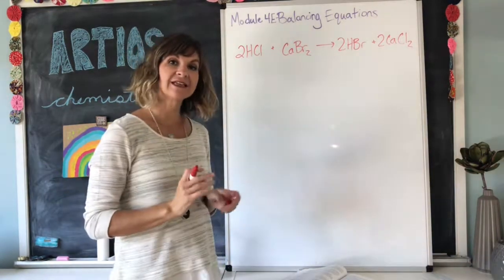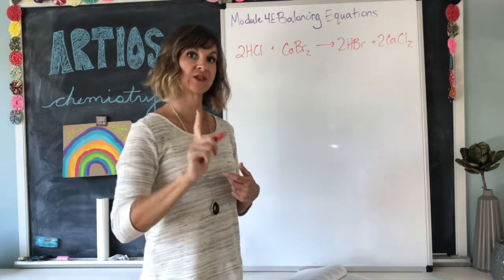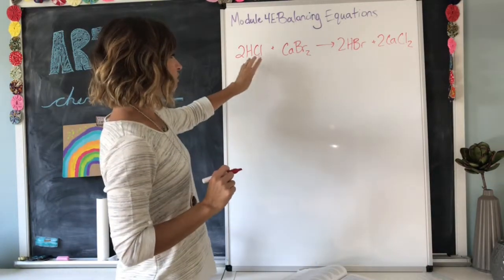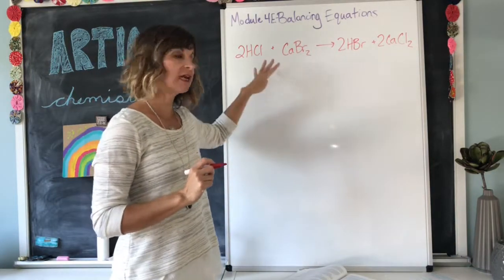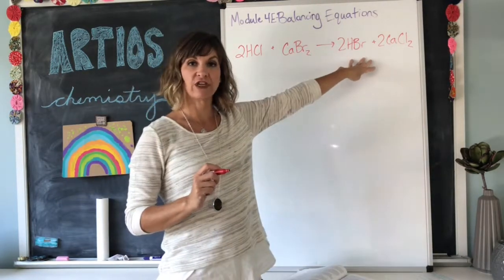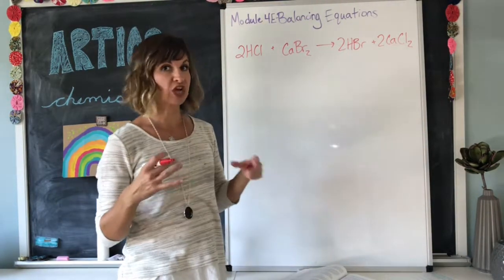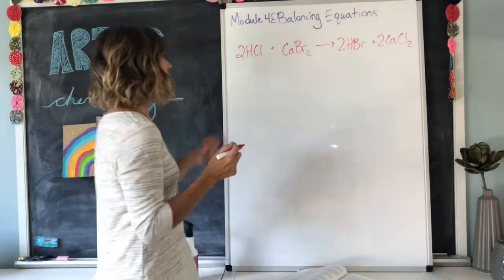That is example 4.1, how they have set it up for you. Now, we have to figure out if it's balanced or not. So, what we need to do is take a look at what atoms are present in the reaction, the reactant side of the equation, and the product side of the equation, and make sure that they match up. That there are the same numbers of atoms of each type.